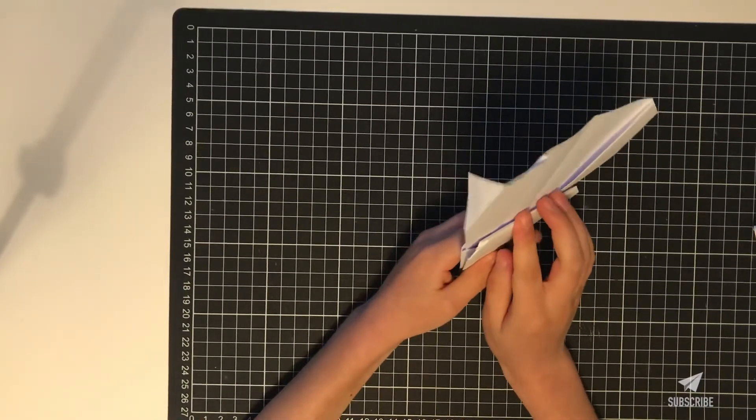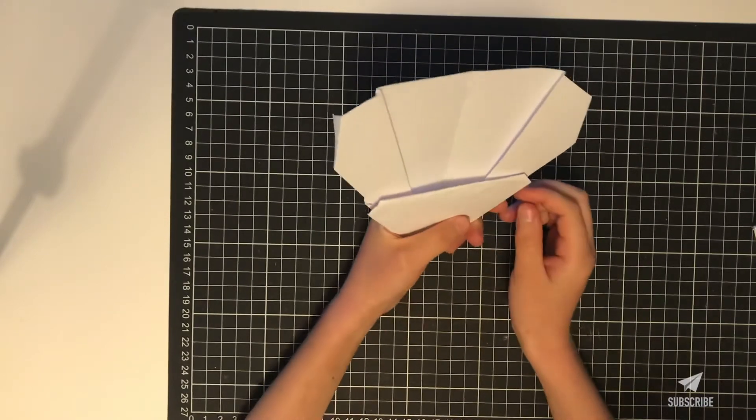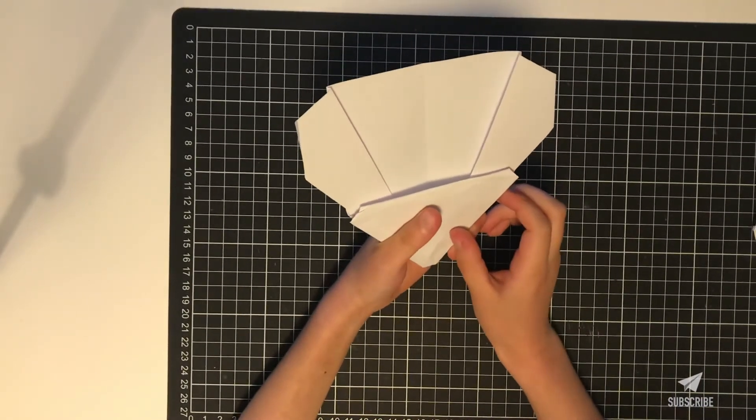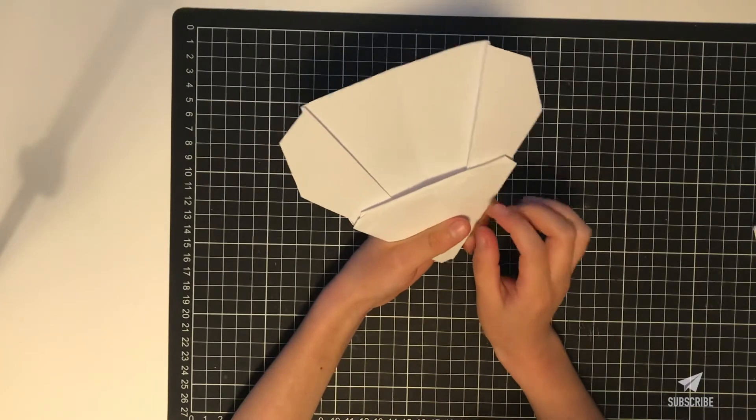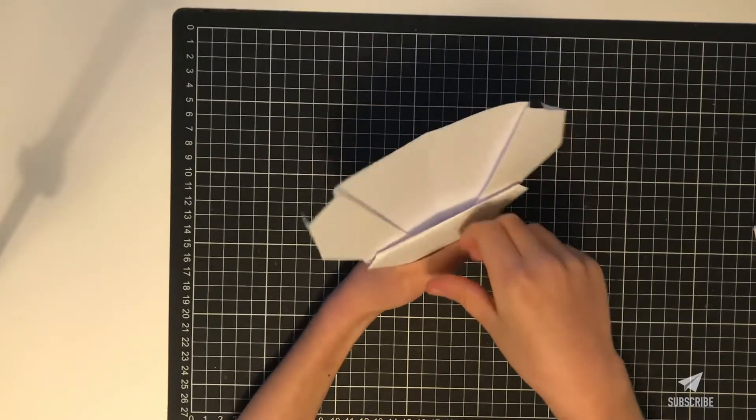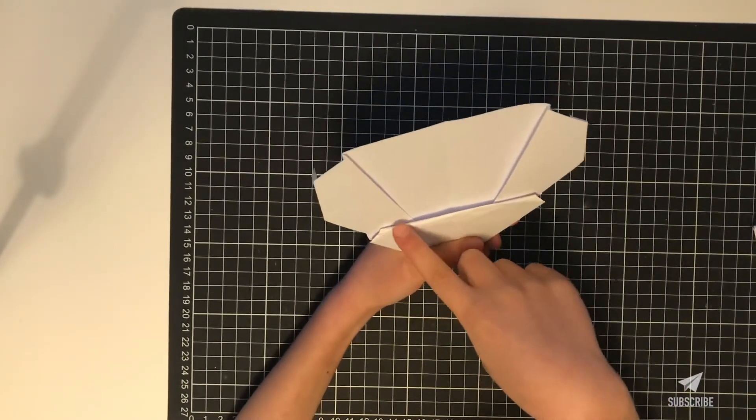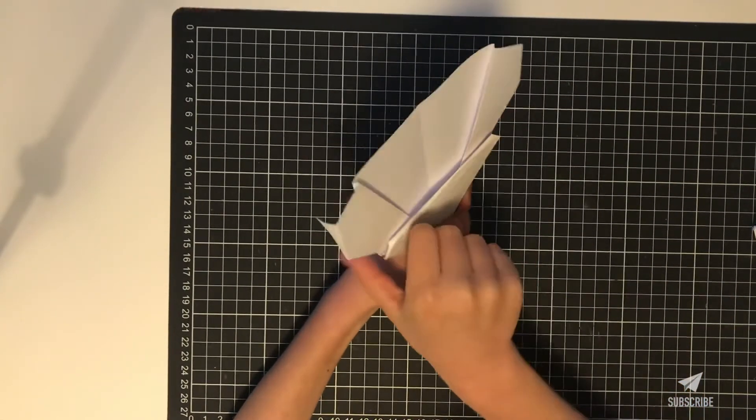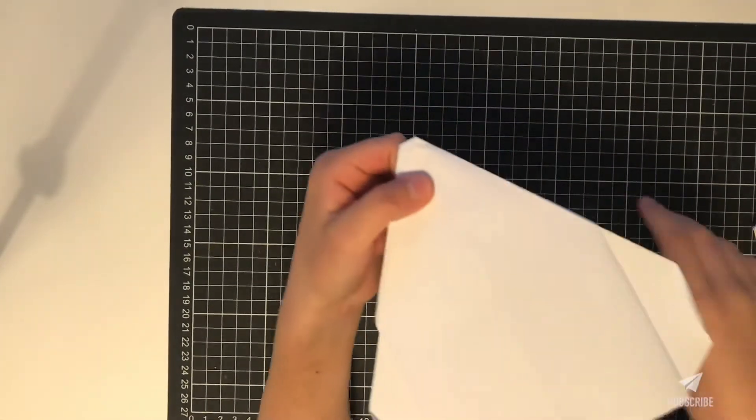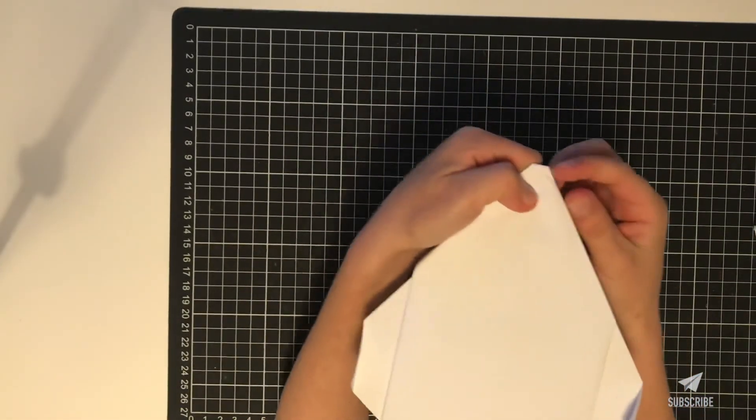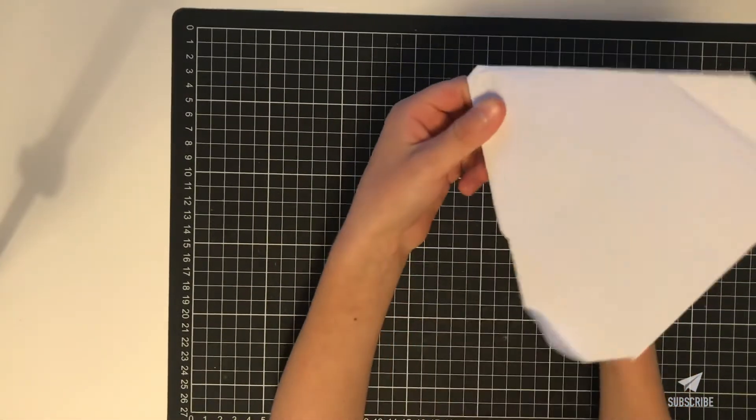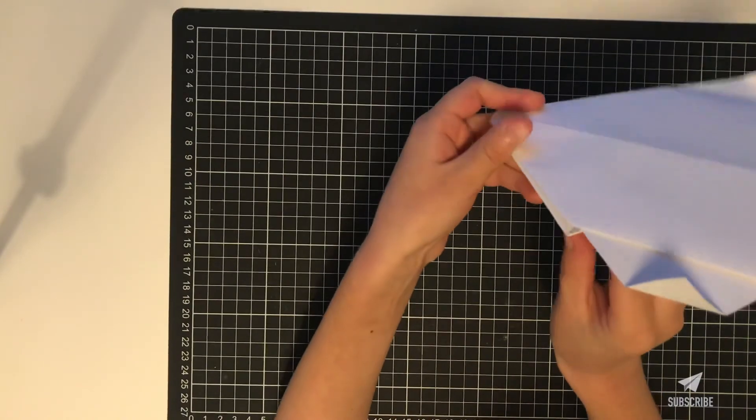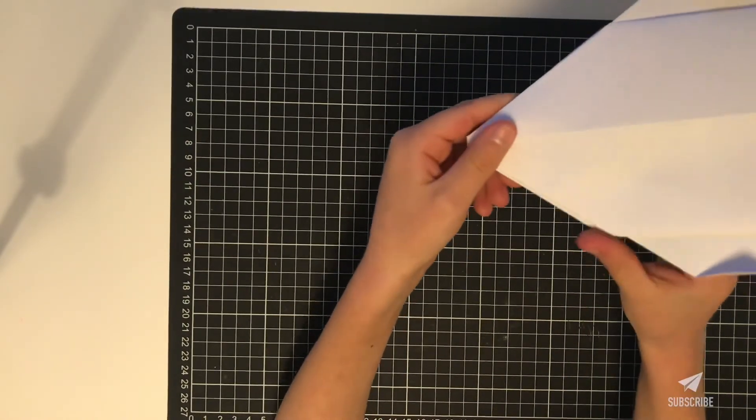You can get a small piece of card paper and fit it in here. Then you can maybe tape it here and you can fly it. It will fly far to the person next door.